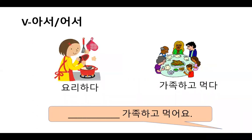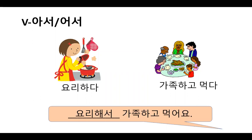요리하다, to cook, and 가족하고 먹다 — eat with your family. Connect those two using 아서 or 어서. 요리하다 changes to 해서: 요리해서 가족하고 먹어요. The meaning is: I cook and then eat with my family.